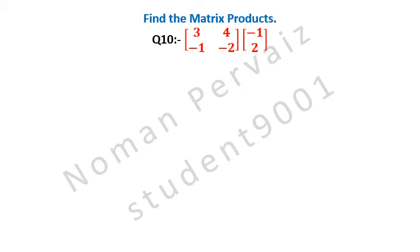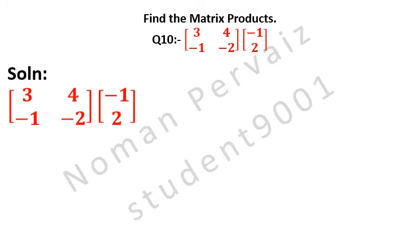Question number 10 is: matrix having elements 3, 4, minus 1, and minus 2, and matrix having elements minus 1 and 2. Let's see its solution. Here we are taking the question as it is.